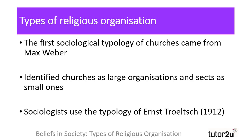The first sociological typology of churches came from Max Weber, and it was quite a simplistic definition. He identified churches as being large organisations and sects as small ones. However, this is quite a limited explanation, as it is based upon subjective interpretations of size, and doesn't really categorise religious organisations based upon their functionality, characteristics, or beliefs.